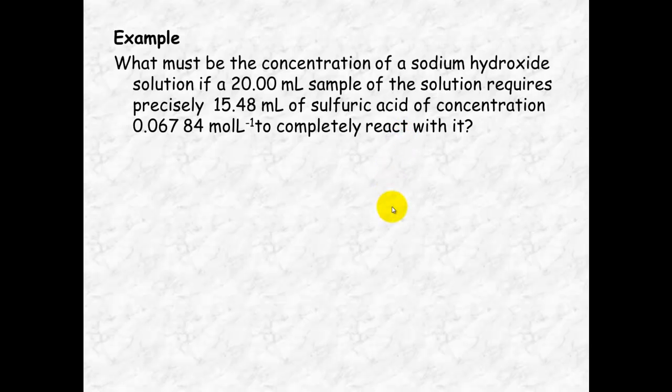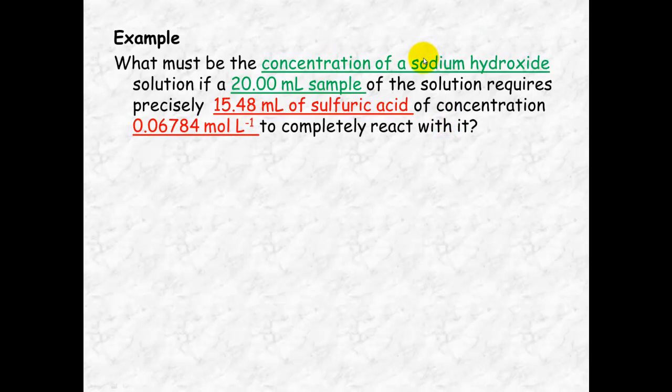So the first thing we need to do is figure out what's reacting in the equation. We'll see here that sodium hydroxide is reacting with sulfuric acid. So we can write a chemical reaction based on that. It's an acid-base reaction. You get an acid reacting with a base which will form a salt plus water. You've got your hydroxide here, so your water is going to get formed and your salt is going to get formed here. This needs to be balanced, so we've got two sodium hydroxides and two water molecules.